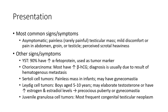Sertoli cell tumors may have gynecomastia. Around 5 to 10 years of age, they may elaborate testosterone or have increased estrogen, leading to precocious puberty and clinical manifestations. Juvenile granulosa cell tumor is most frequent.